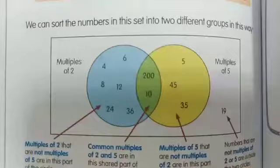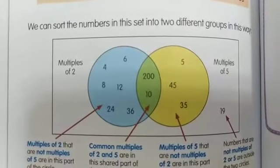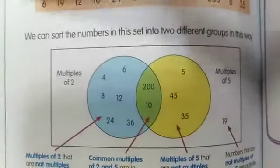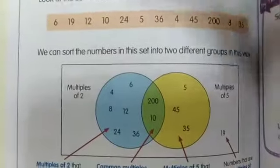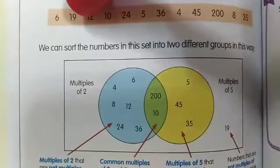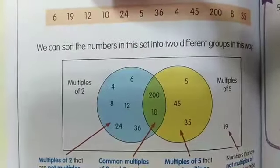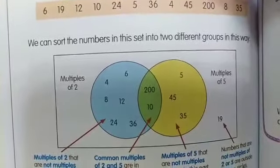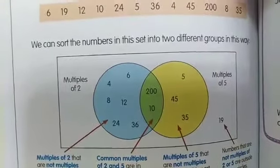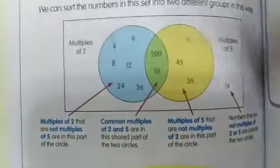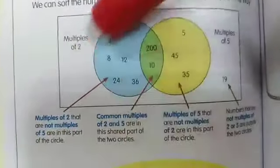Multiples of 2 are like 2, 4, 6, 8, and so on. If you go back to the number set, you can find that 6 is a multiple of 2, 12 is also a multiple of 2, and 10, 24, 36, 4, 200, and 8 are all multiples of 2, so we can put them in this part of the circle.